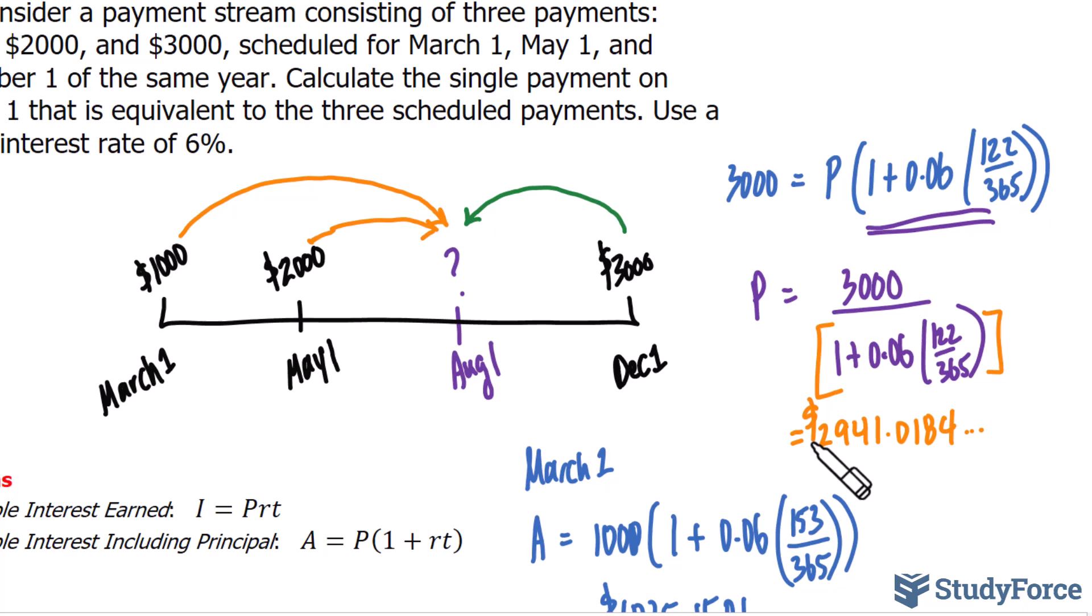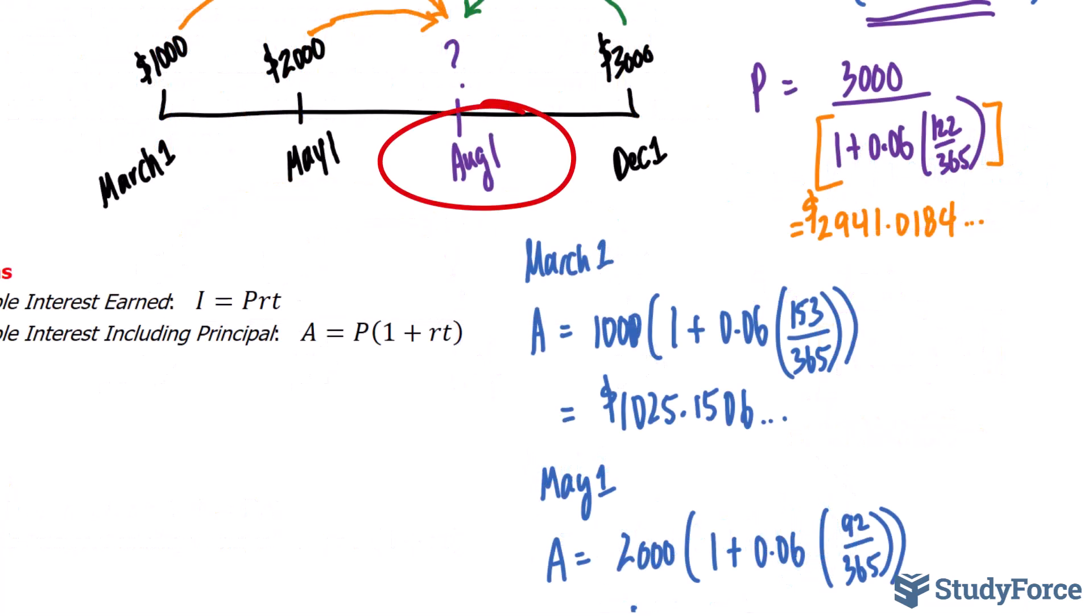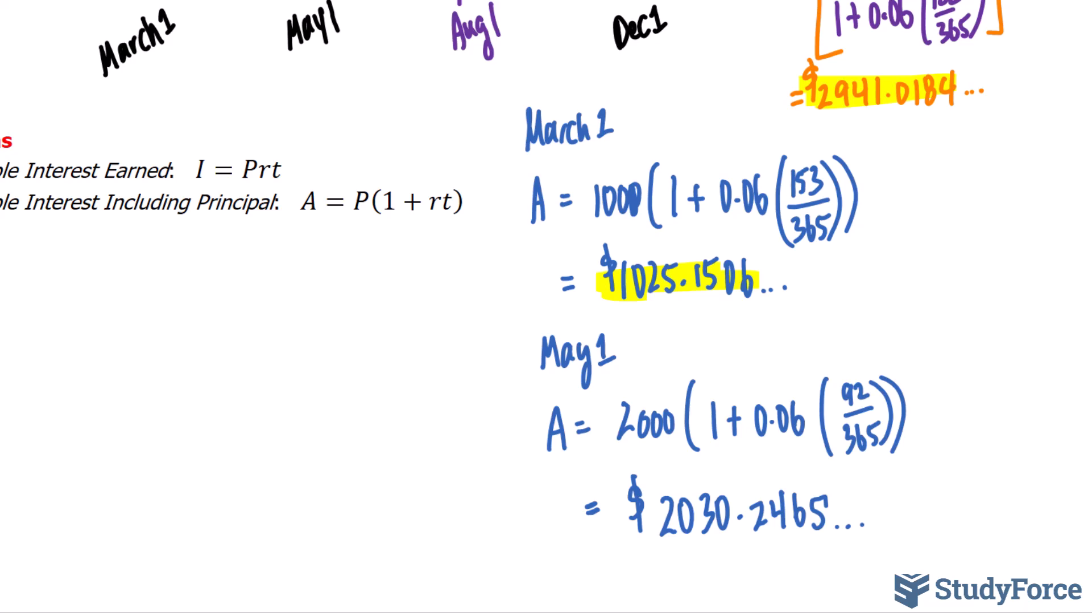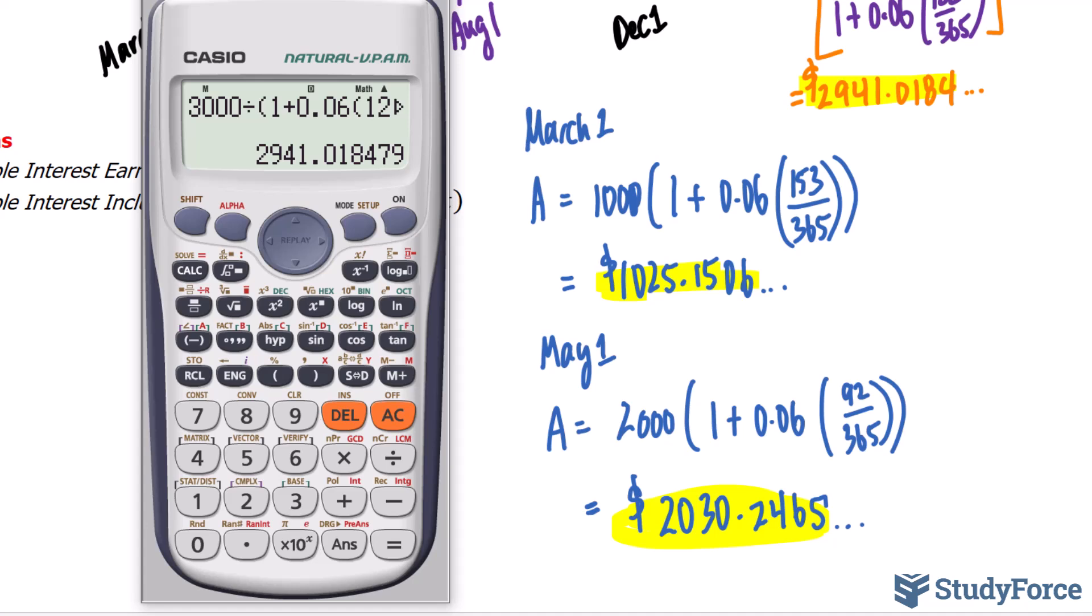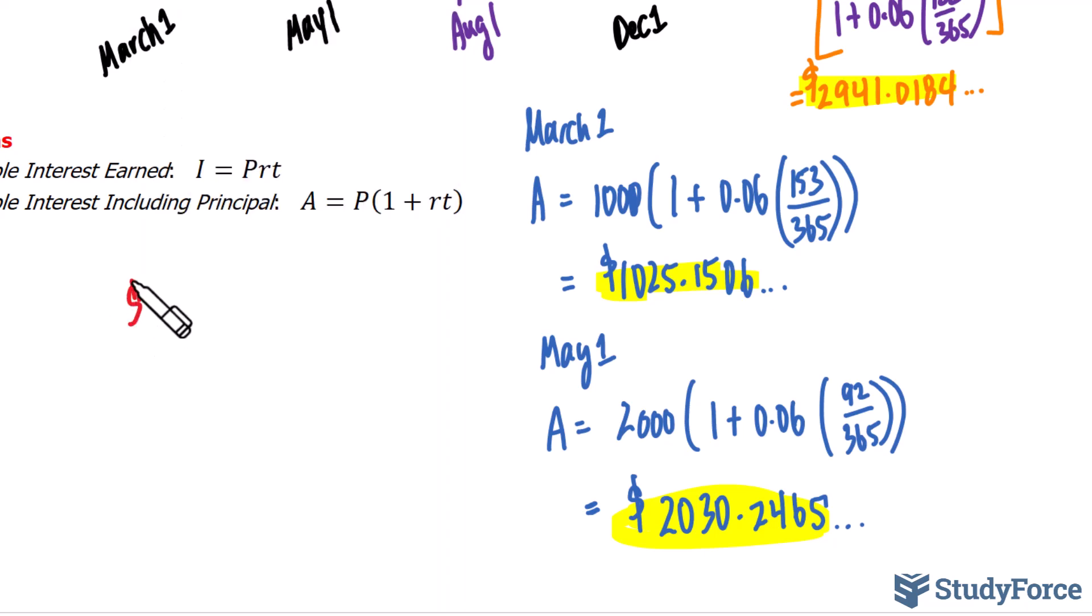Therefore, to find the single payment, which is due on August 1st, that consolidates all three of these payments, we must add that value with that value and this one. Let's use our calculator. We'll take the number on our screen plus 1025.1506 plus 2030.2465. And it is at this time where we can round to two decimal places. So, what is owed on August 1st is $5,996.42.